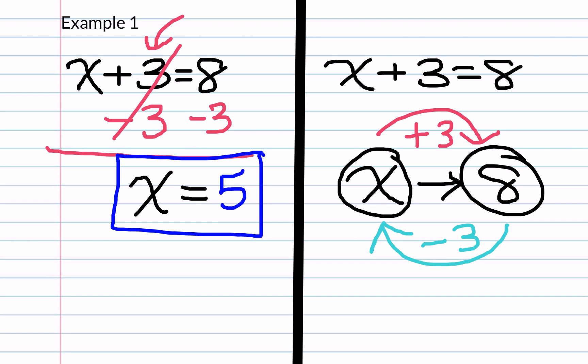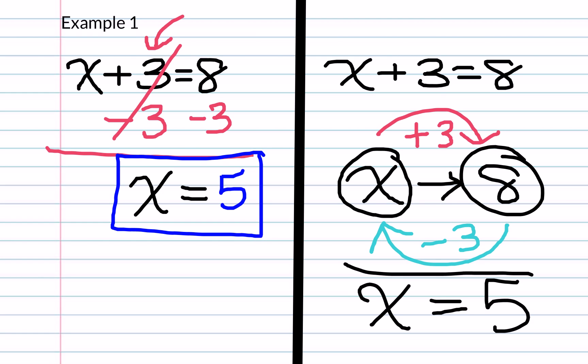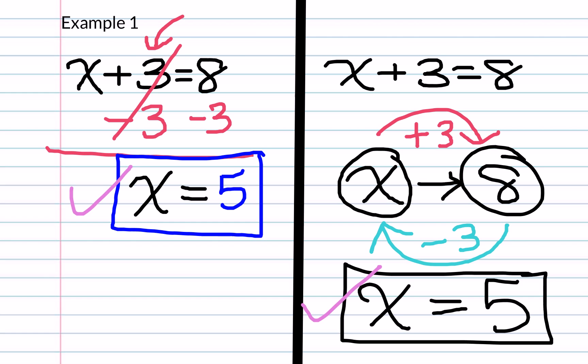Then we know that 8 minus 3 is, in fact, equal to 5. And as you can see, no matter which method we use, we get the exact same answer on both sides.